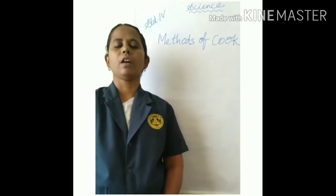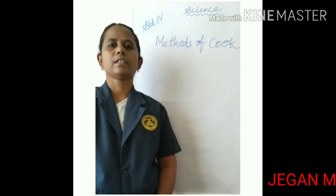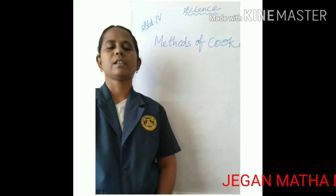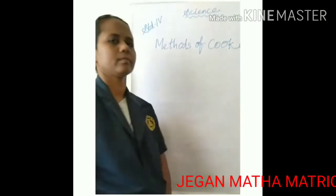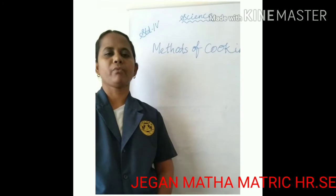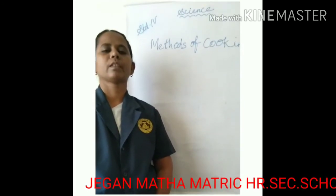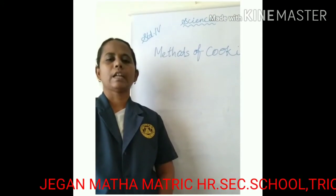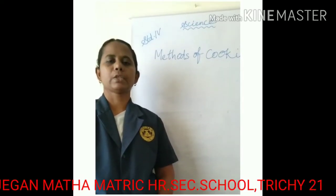Welcome students. Now I am going to discuss about the second term science subject. The first lesson is a continuation of the method of cooking. In the last class we learnt about food and types of food. Food is the basic need of our life. The food has two main sources: natural sources, that means plants and animal sources.